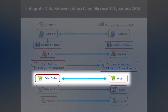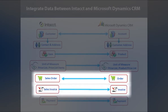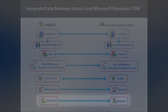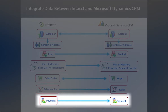Sales order information is a two-way integration. It is usually created inside Dynamics CRM as an order and submitted to Intact. Once that is processed, it will turn into a sales invoice in Intact, which then creates an invoice back in CRM. When payment is made from the customer into the Intact system, the payment information will come back over to Dynamics CRM as well.